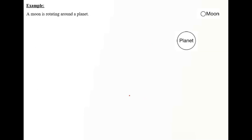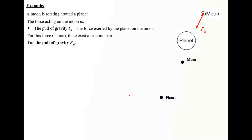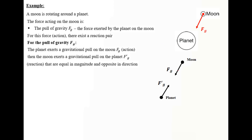Another example: a moon rotating around a planet. The force acting on the moon is the gravitational pull exerted by the planet on the moon. The planet exerts a gravitational pull on the moon, F_g; then the moon exerts a gravitational pull on the planet, F'_g. Both are of the same type, acting at the same time on different bodies, equal in magnitude and opposite in directions.